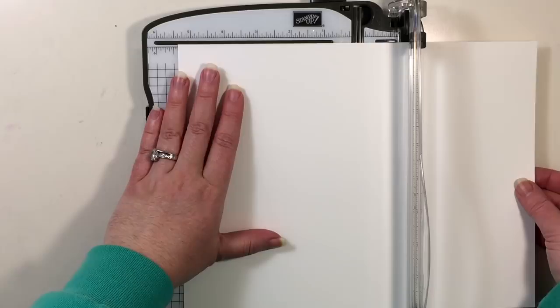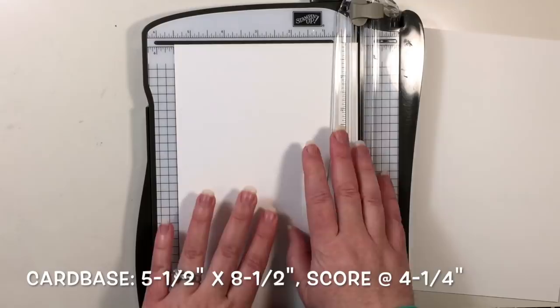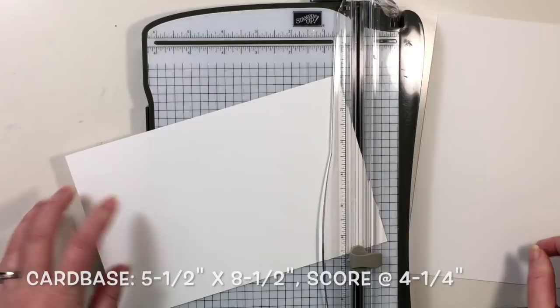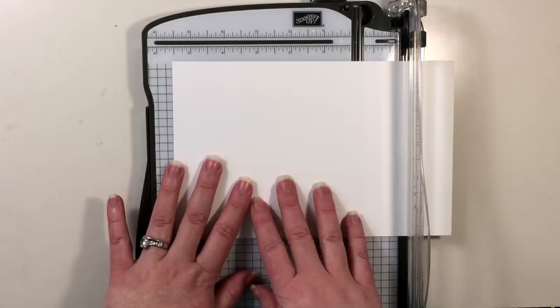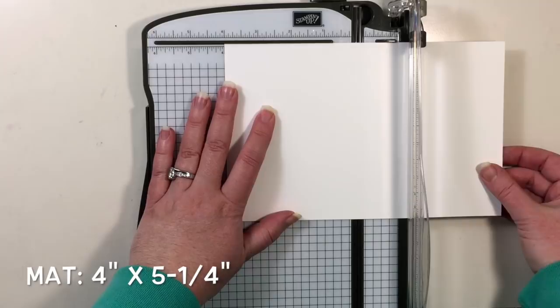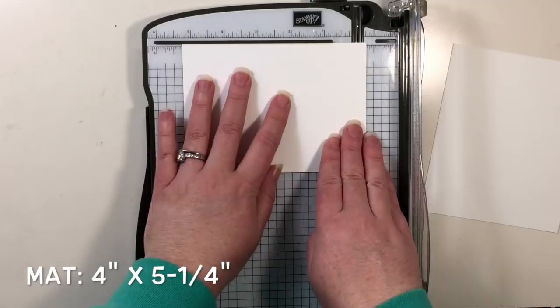We're going to start with a full sheet of Whisper White cardstock and we're going to cut our card base. So with the long edge at the top, we're going to cut that at five and a half and then we're going to rotate it and score it at four and a quarter.